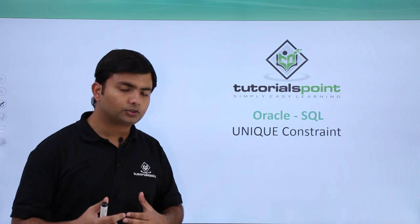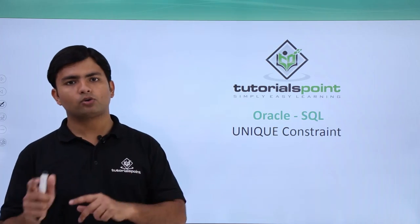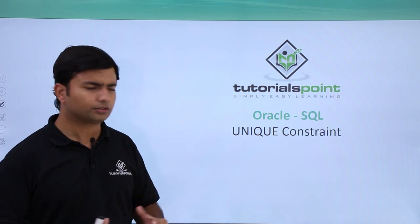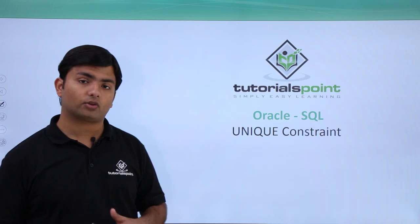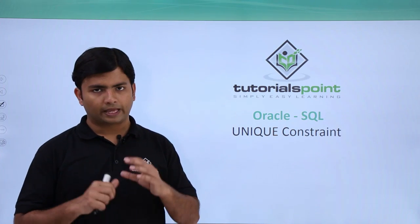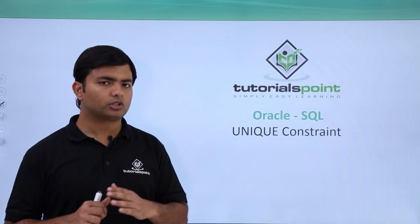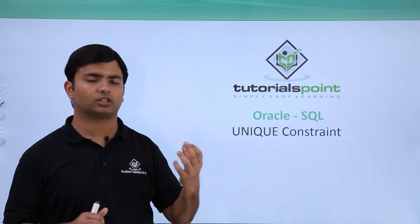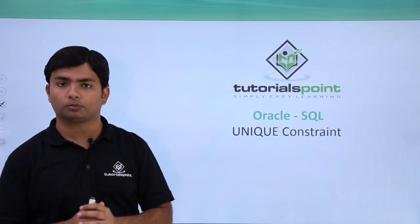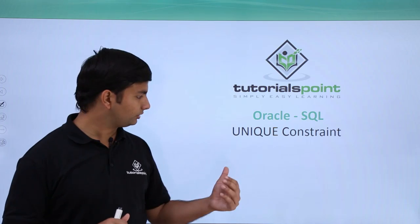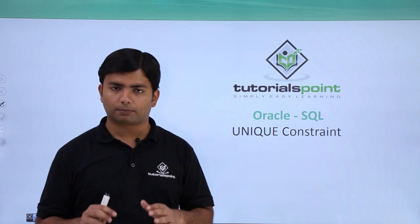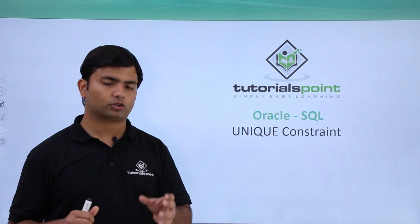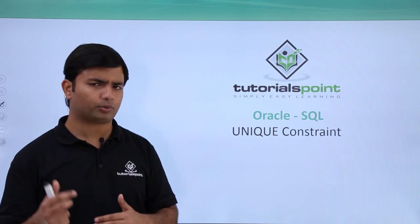This unique constraint can be added at the column level or table level, and the constraint name is optional. If you add it at the column level, it ensures uniqueness only for that specific column. If added at the table level on a single column, it behaves the same as column level.